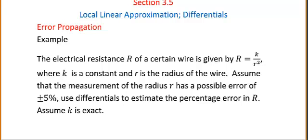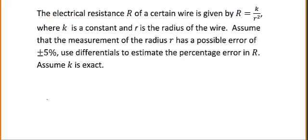Let k be a constant of proportionality and r be the radius of the wire. Assume that the measurement of the radius has a possible error of plus or minus five percent. We want to estimate the percentage error in the resistance.